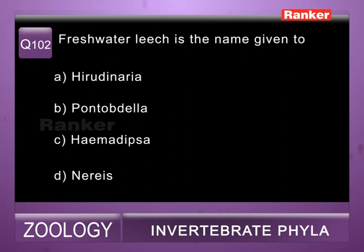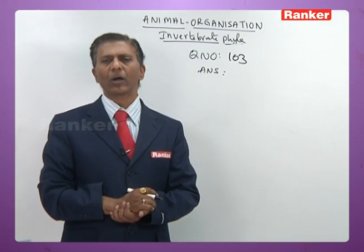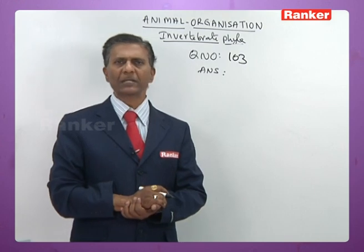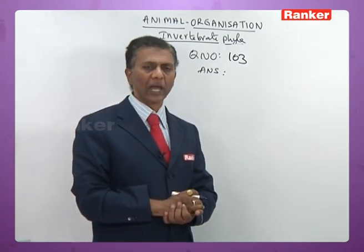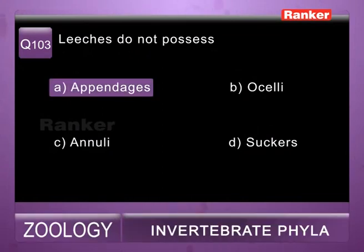Question 103: leeches do not possess — a) appendages, b) ocelli, c) annuli, d) suckers. Leeches have ocelli (simple eyes), annuli (sub-segments of each segment), and suckers (locomotor organs). They do not have any appendages. So the answer for 103rd question is a) appendages.